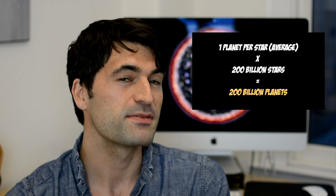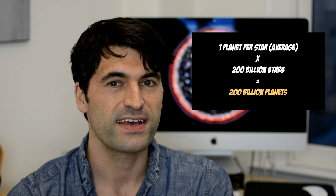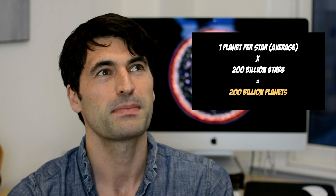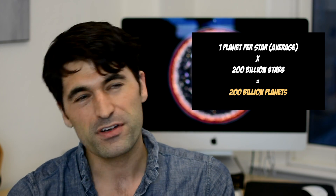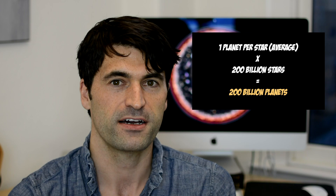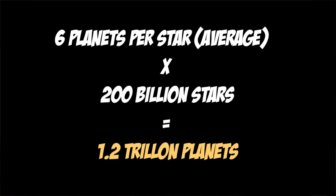To recap from the last video, we ended up with a conservative estimate of 200 billion planets in our home galaxy, which is an average of about one planet per star. On the other hand, our optimistic estimate ended up with 1.2 trillion planets in our Milky Way, or an average of six planets per star.